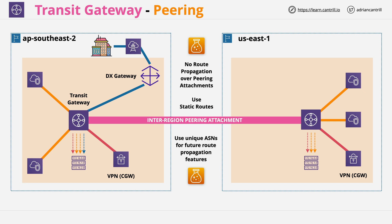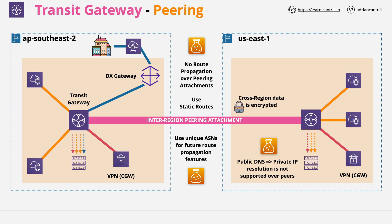It's also worth noting that the resolution of public DNS to private addressing — for example with EC2 — isn't supported over inter-region peers. Remember how with a VPC, if you attempt to resolve the public DNS of an EC2 instance from within the same VPC it will resolve to the private address? This doesn't currently work over Transit Gateway peering attachments, and this is more to do with the cross-region nature rather than a Transit Gateway limitation. Additionally, much like VPC peering, data transfer over the peer is encrypted over the global AWS network.